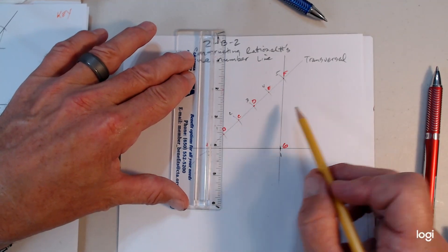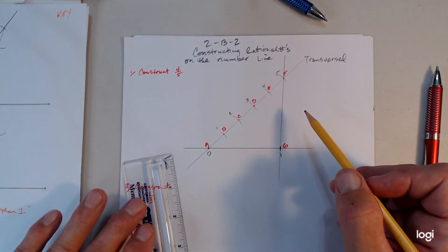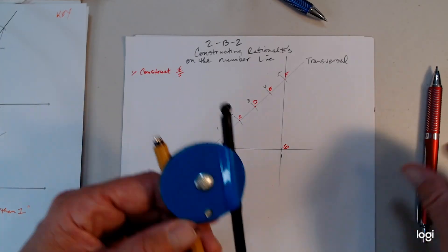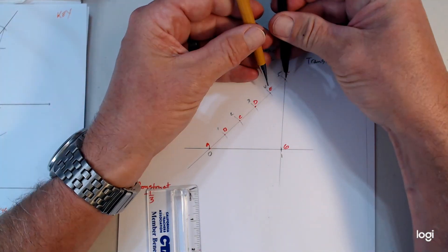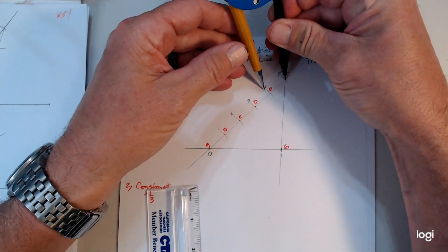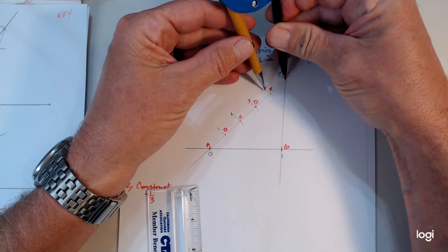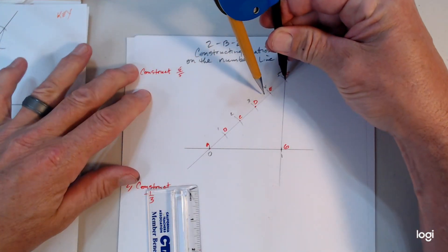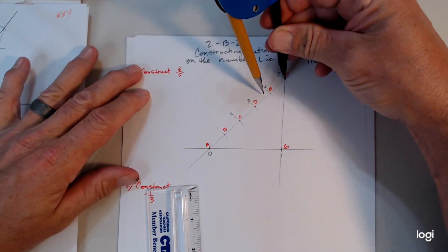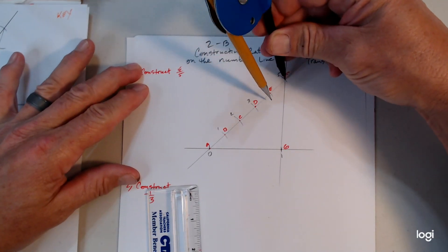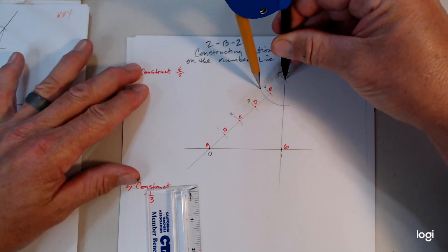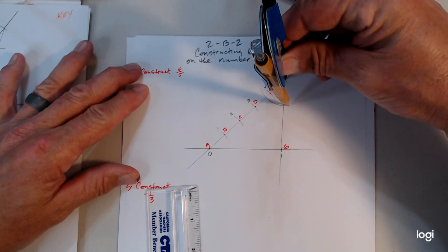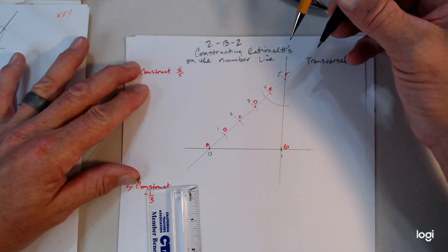It's the same idea no matter what fraction you're working with. So you grab your compass again. I'm going to open it up a little past F and E — put it at F here and go a little bit past E because you don't want your arcs to overlap. Construct an arc intersecting both transversals.